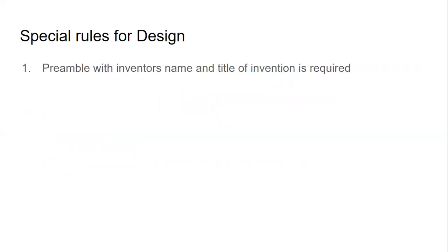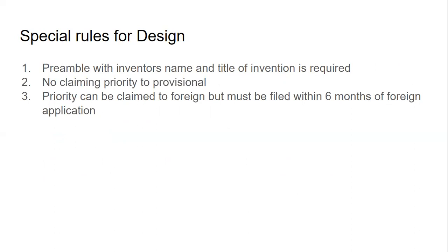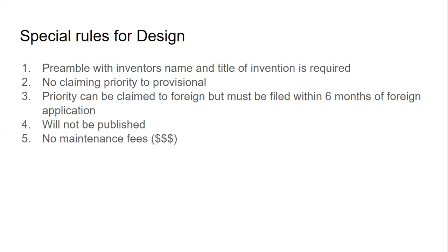For special rules of design: there's a preamble included with the inventor's name and title of invention. You cannot claim priority to a provisional application. Priority can be claimed to a foreign application, but it must be filed within six months of the foreign application — versus utility or plant, which is 12 months. For prior art under 102(d), it's also six months. Two good ones to remember: for design, it's only six months.